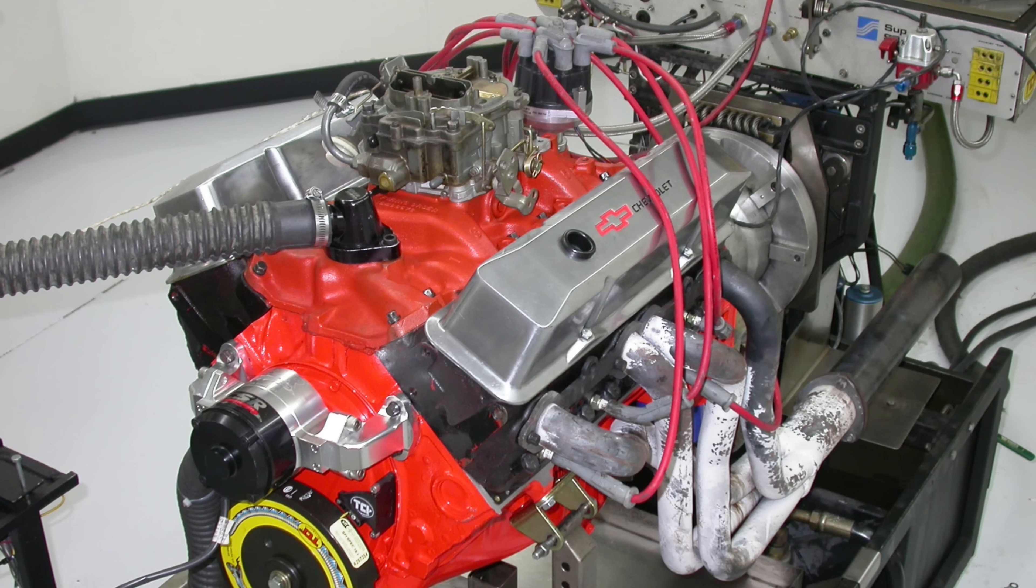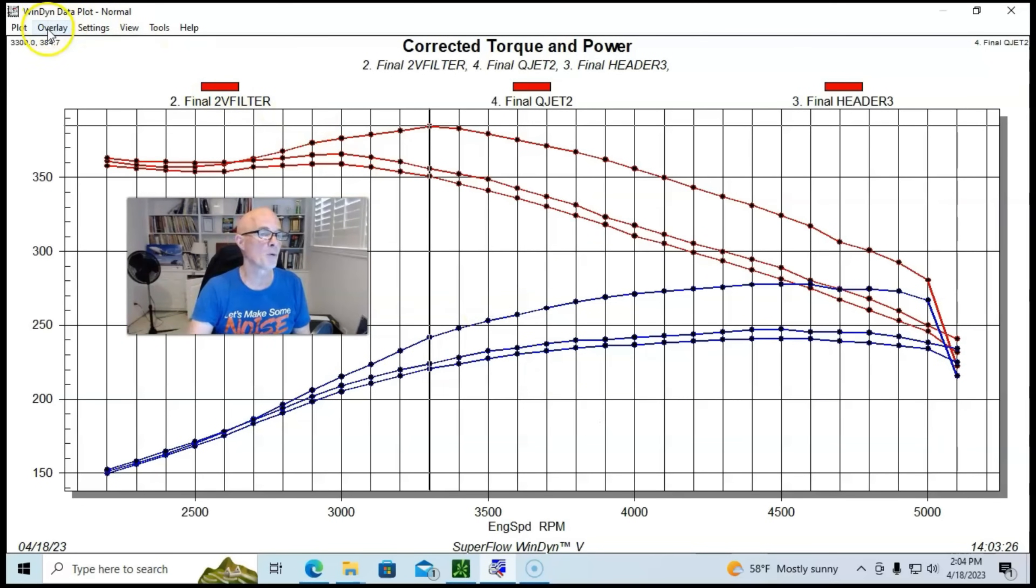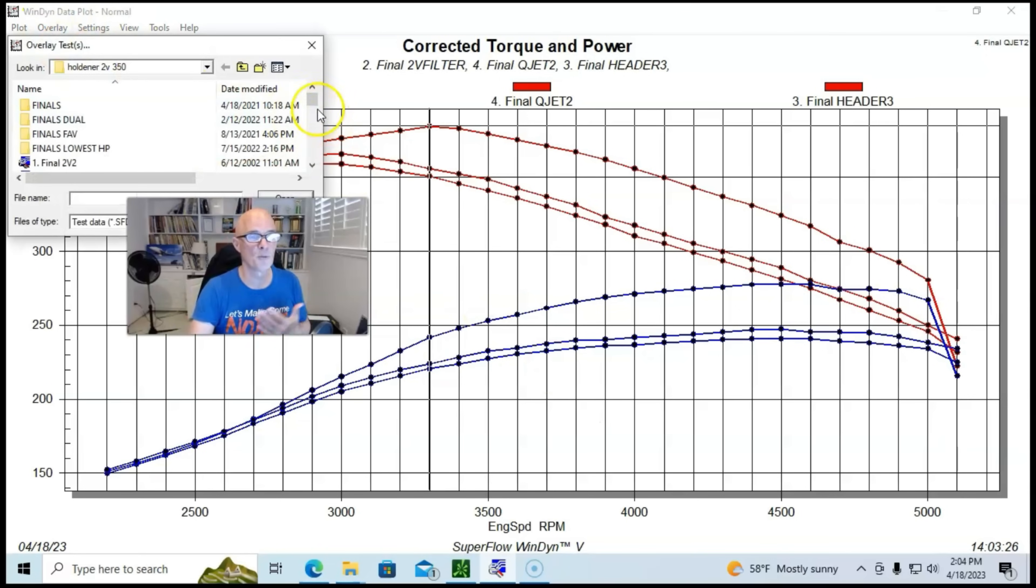A lot of guys would say 'oh but the two-barrel makes more torque' - that's within a couple foot-pounds, probably a temperature difference there. Especially if you're running on just the primary circuitry, it works pretty well on a four-barrel.